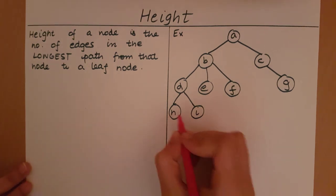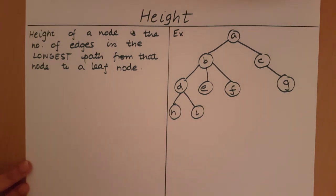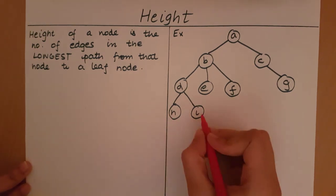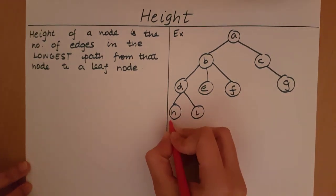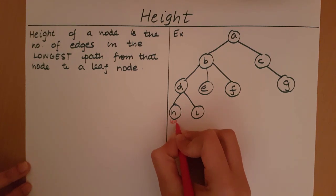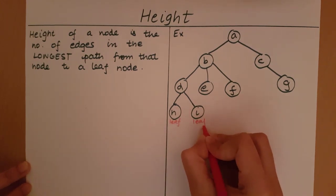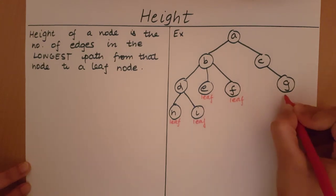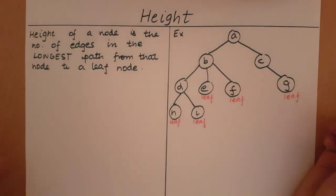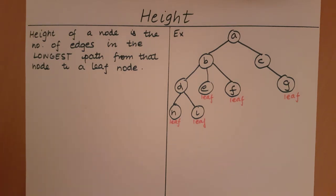A node with no children is going to be a leaf node. H, I, E, F and G have no children, so I am going to call them leaf nodes. Now if we go back to the definition of the height of a node, it's going to be the number of edges in the longest path from that node to the leaf node.